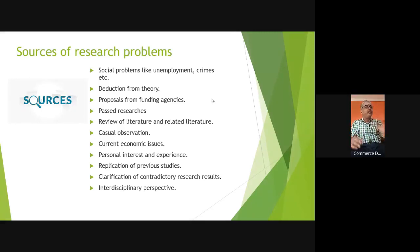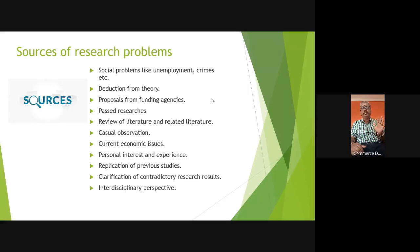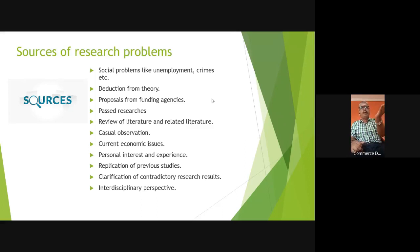So, where can you find the sources of research problems? The first one: look at the society. Society gives you a lot of issues which we never imagined. If you look at social problems like unemployment, crimes, etc., you get a lot of topics for research. Look at how people are treated, how they look at victims.